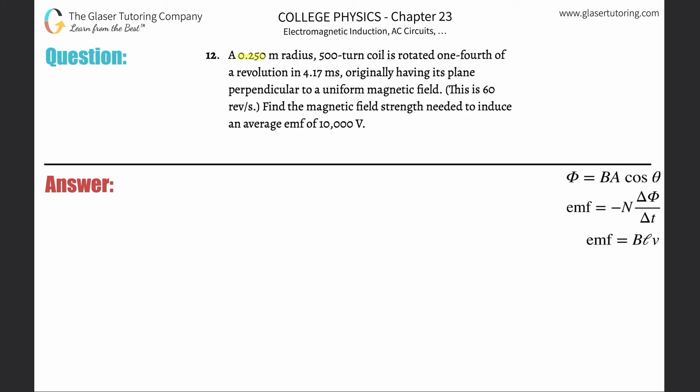Number 12: A 0.25 meter radius, 500 turn coil is rotated one-fourth of a revolution in 4.17 milliseconds, originally having its plane perpendicular to a uniform magnetic field. Find the magnetic field strength needed to induce an average emf of 10,000 volts.